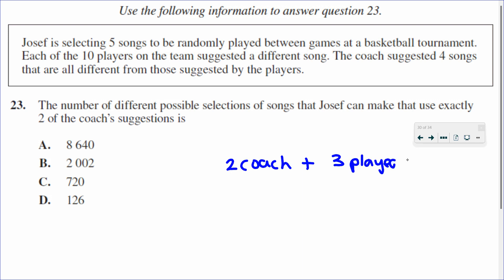This is a combination because the order in which we select the songs doesn't matter. The coach suggested four songs and we select two of them — and 'and' means multiply — the players suggested ten songs and we select three of those.